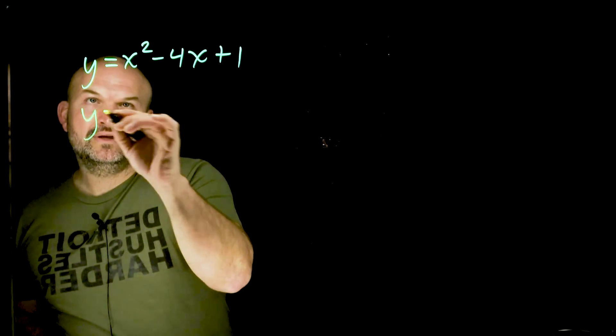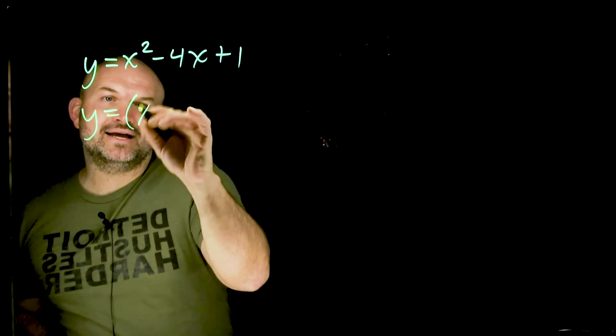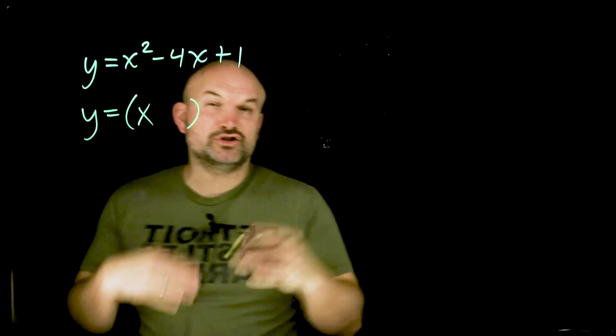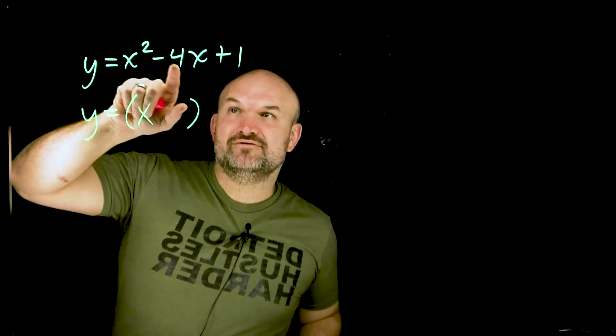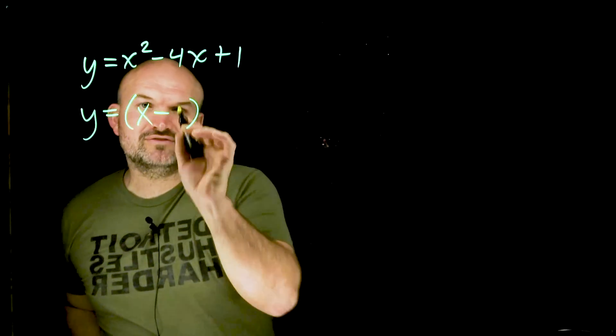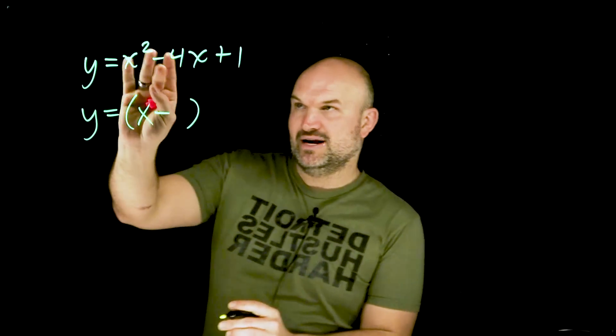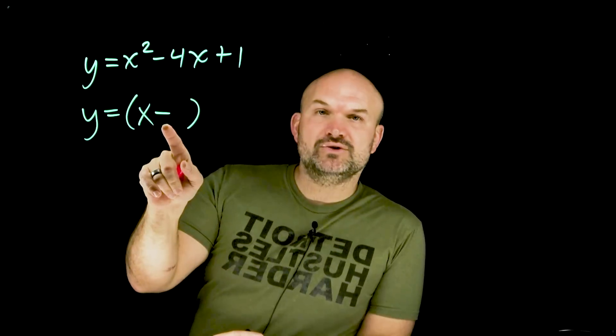So, the first thing I'm going to do is I'm gonna have my parentheses with my x, because I know I'm gonna create a binomial square. Whatever my sign is in front of my linear term, I'm going to preserve that sign. Always go ahead and preserve the sign from your standard form to your vertex form.